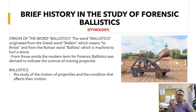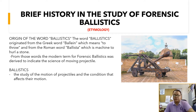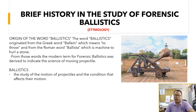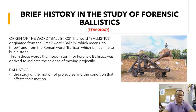In ancient times, their short-range weapons were the bow and arrow, spears, clubs, and knives. In our modern times, the weapons used by soldiers include the revolver, pistols, rifles, shotguns, and bazookas. Ballistics is the study of the motion of projectiles and the conditions that affect their motion.